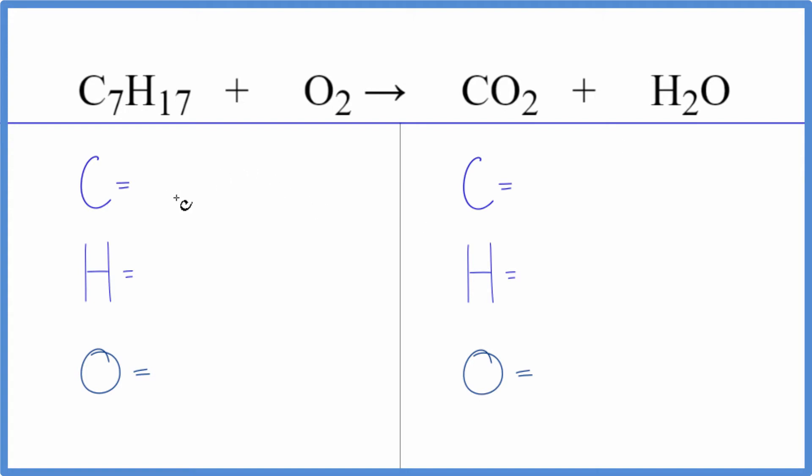So to balance the equation, let's count the atoms up first. We have seven carbons, 17 hydrogens, and two oxygens. Product side, we have one carbon, two hydrogens, then two oxygens, and don't forget the oxygen in water, so we have three.